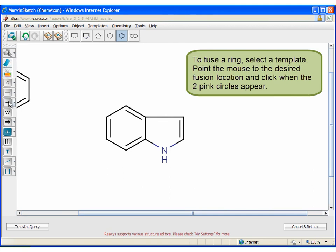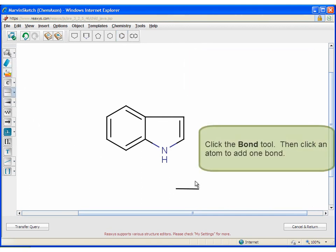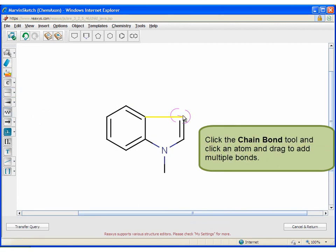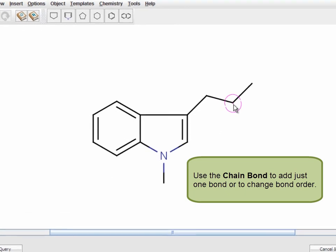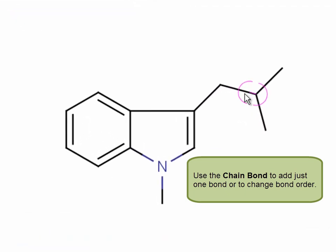Click the Bond tool, then click an atom to add one bond. Click the Chain Bond tool and click an atom and drag to add multiple bonds. You can also use the Chain Bond tool to add just one bond or to change bond order.